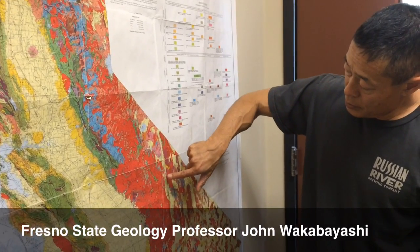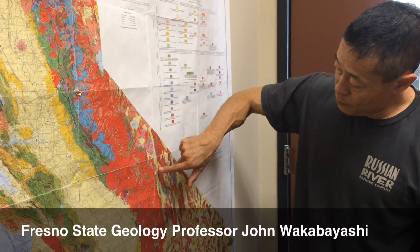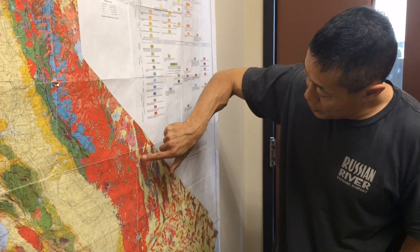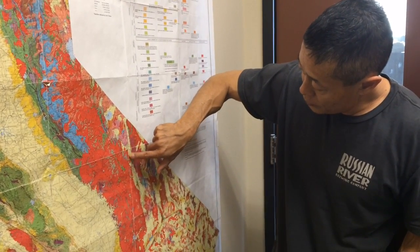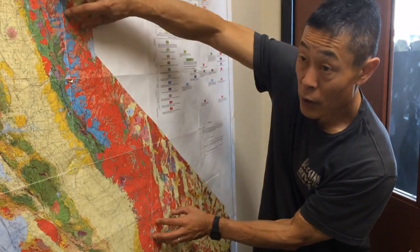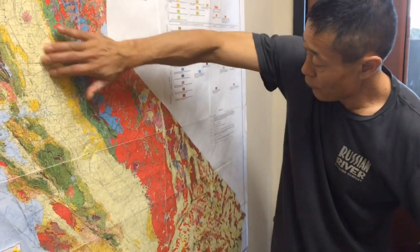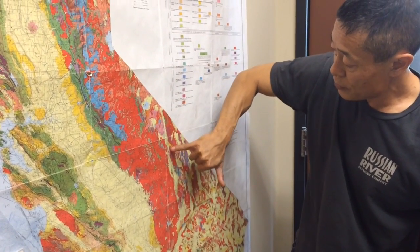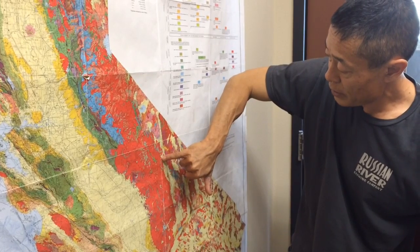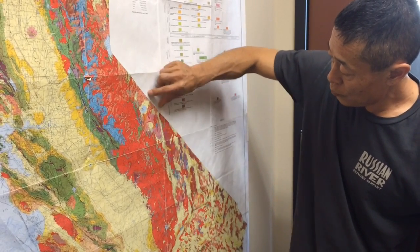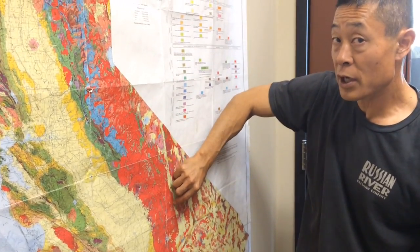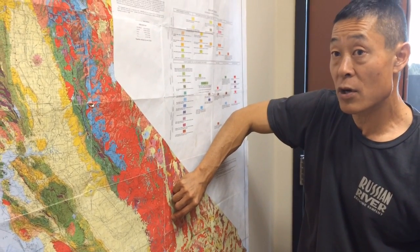So the Big Pine earthquake happened on the east side of the Sierra Nevada, and so that's here. This is the Sierra Nevada, this is the Central Valley, this is Owens Valley on the other side of the Sierra Nevada, and so that earthquake happened here. This is in a zone which is quite seismically active, and we're kind of accustomed to earthquakes occurring on that zone.